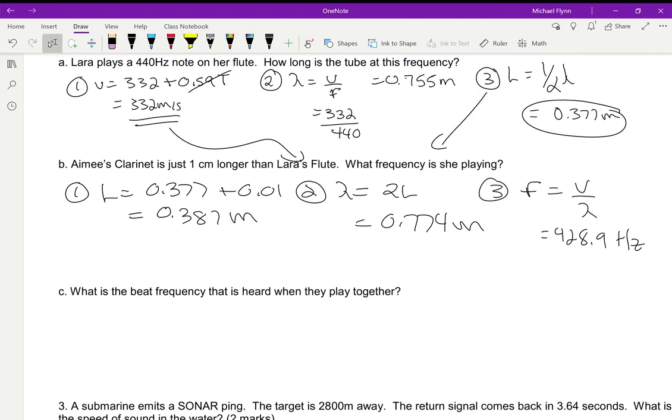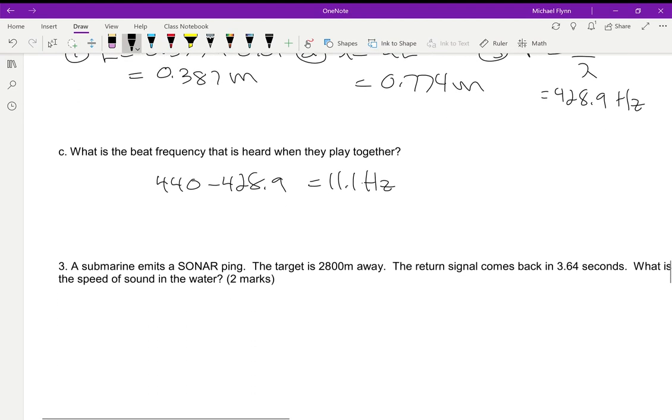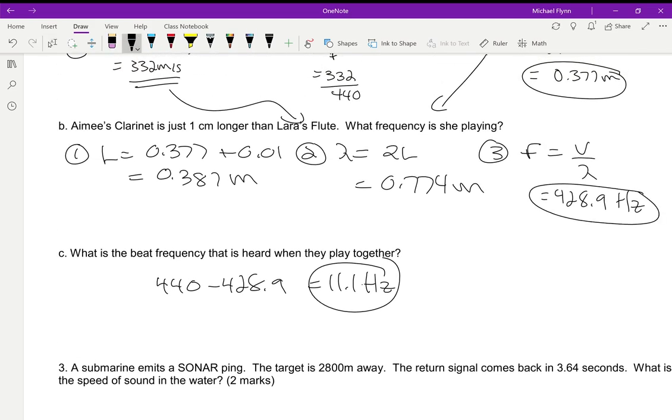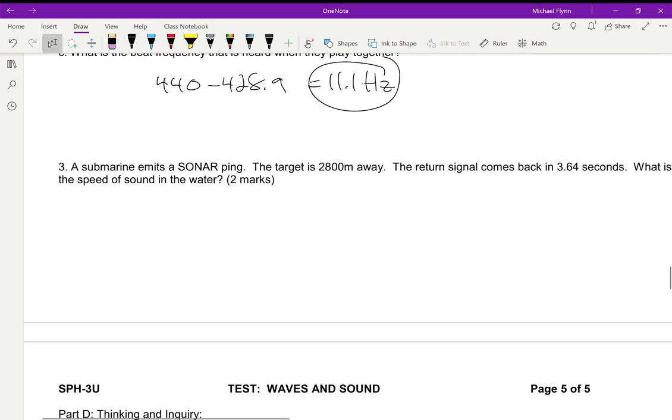That's a little bit different than Lara's note, right? Lara's 440 and Amy is 428. She's just a little bit off - one centimeter is all it takes to make a different frequency. The longer the tube, the lower the note. So the beat frequency is the difference: 440 minus 428.9, so that's 11.1. And there's your answer for question C.